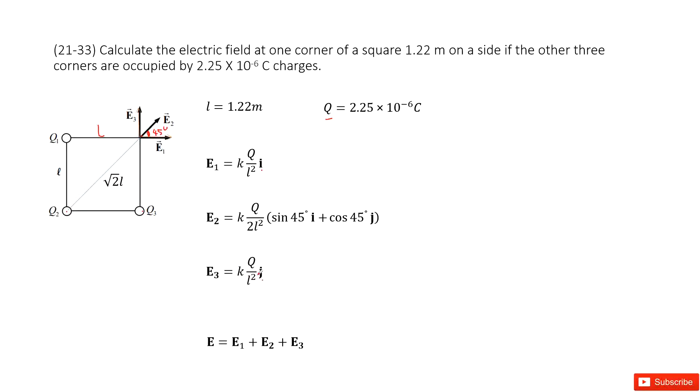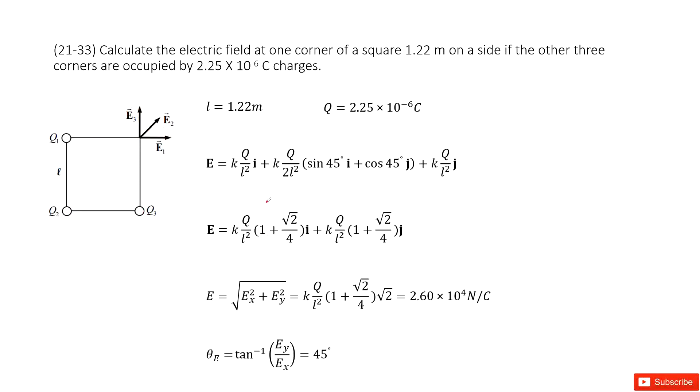Now we need to find the electric field at this position. That means we need to do addition for three vectors E1, E2, E3. We add them together and input E1, E2, E3 inside.